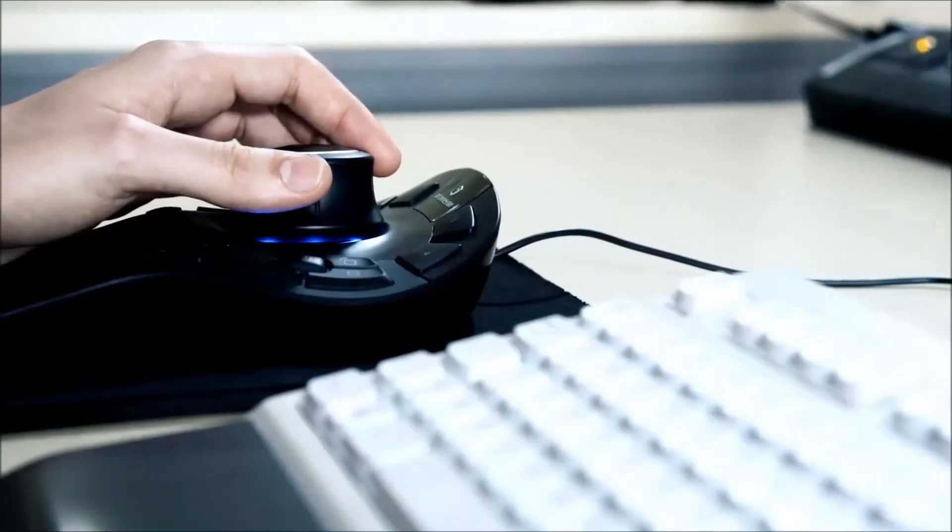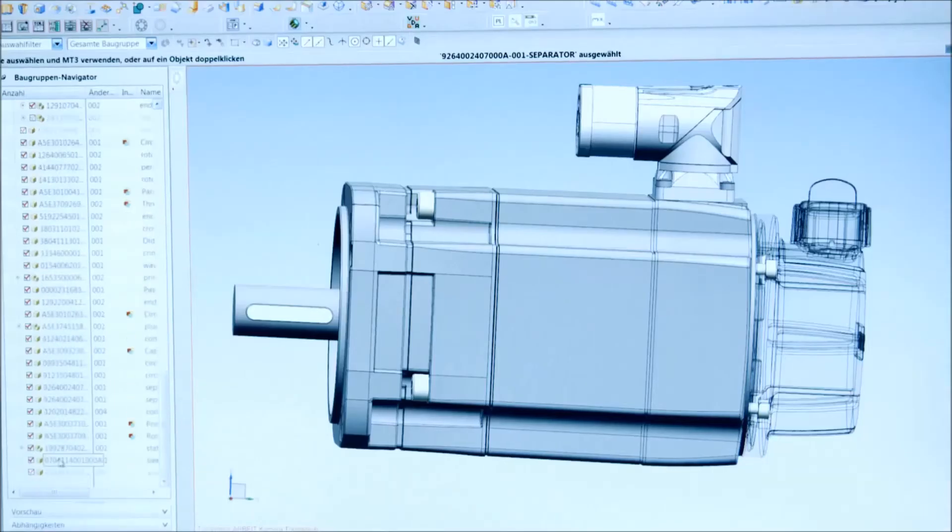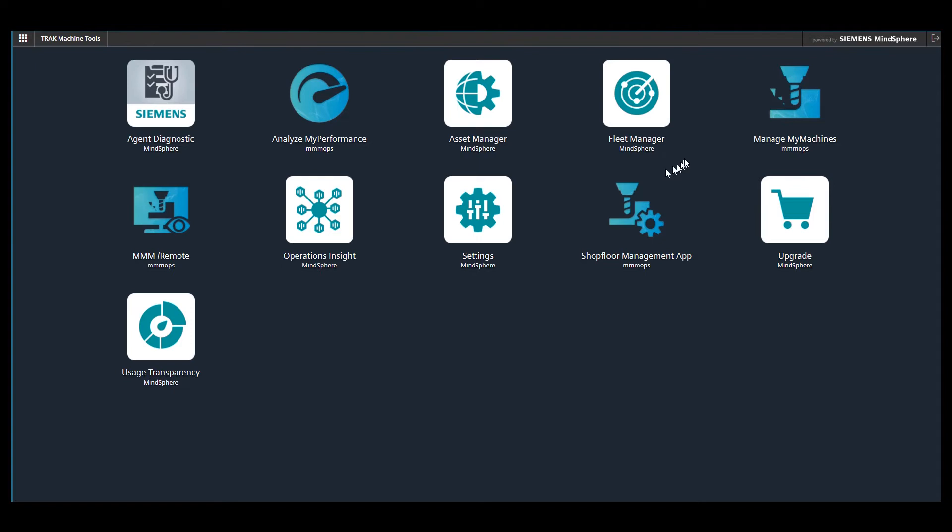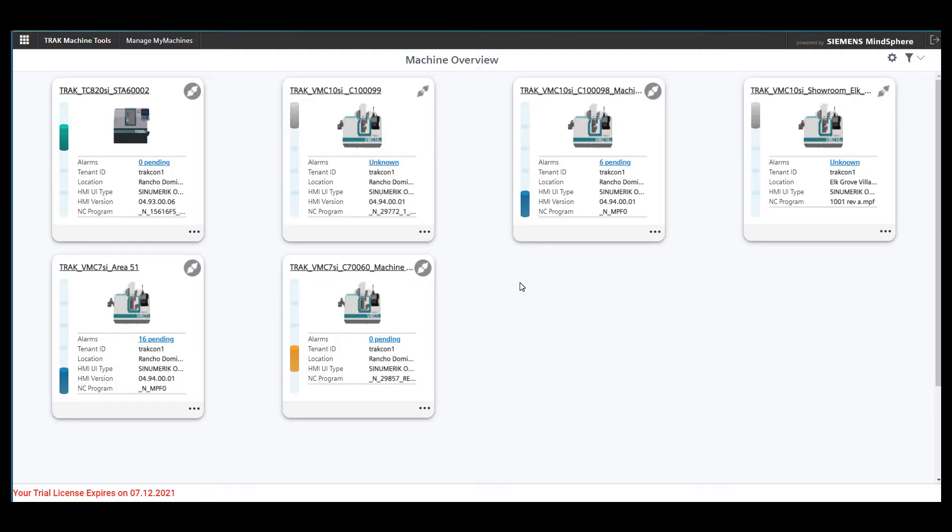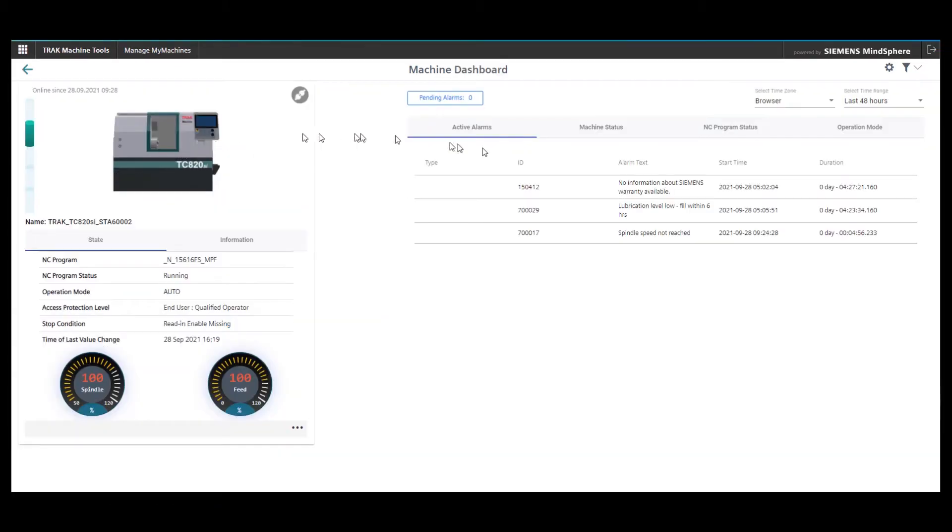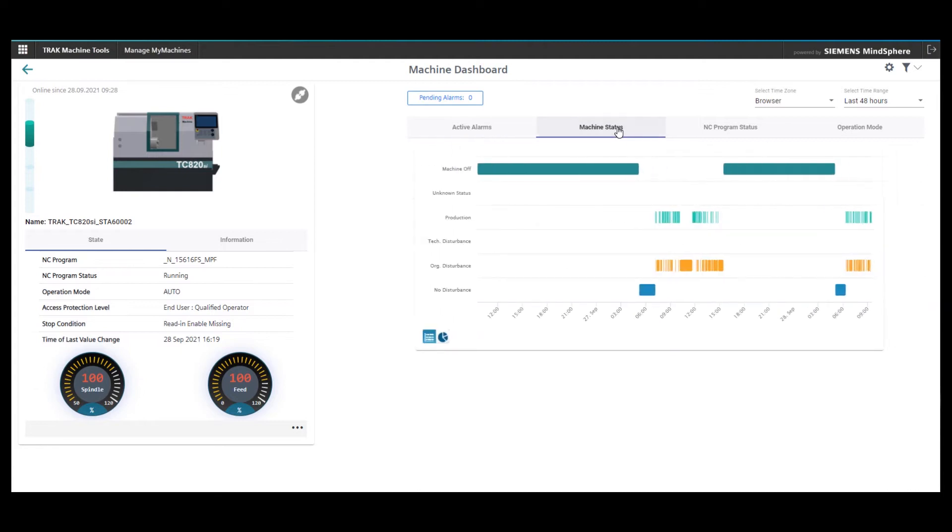Secondly, the Cinemaric One is a relatively open platform. And that means Siemens is going to continue to develop applications. But other developers can build applications as well in connectivity, automation, that will work on this control. And we are one of those developers.